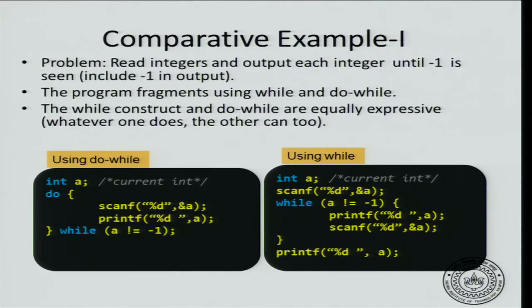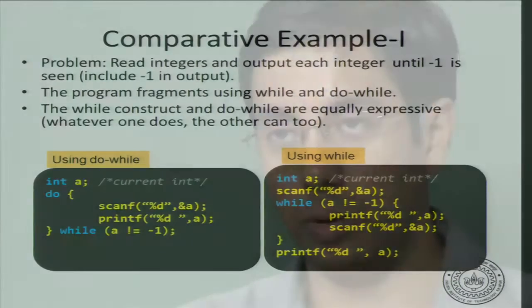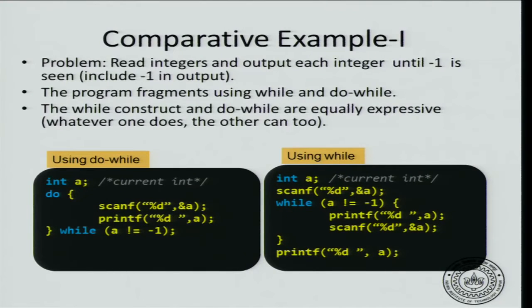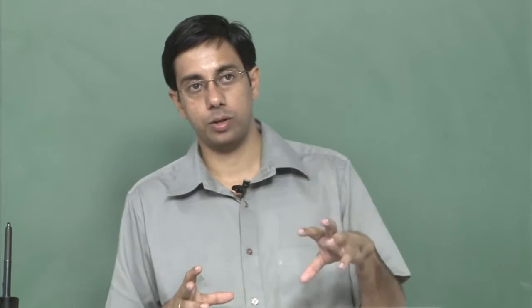Let us see the comparison between a while loop and a do-while loop with the following problem. You have to read numbers and output integers until a minus 1 is seen. The difference is that in this problem you have to include the minus 1 — read all numbers up to and including minus 1 and print all of them. The while construct and the do-while construct are equally expressive, so you cannot write any more new programs using do-while than you could using while. But certain kinds of programs are easier or shorter using the do-while construct.